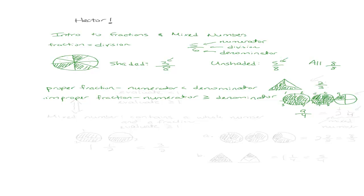A couple of things you might have noticed: when we have a proper fraction, our fraction is going to evaluate to be less than 1. We're representing 2 thirds of the triangle — not the entire triangle. But improper fractions are going to evaluate to be greater than or equal to 1. You can think of this as 1 complete pie, 2 complete pies, and a quarter of a third pie. So we call this a mixed number. Improper fractions can be written as mixed numbers.